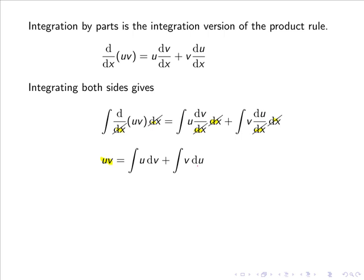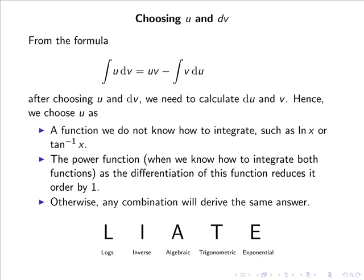If we rearrange this expression, bringing ∫v du over to the left-hand side, we have ∫u dv = uv - ∫v du. This is the formula for integration by parts.